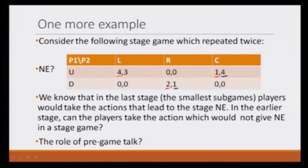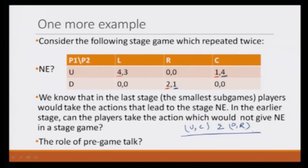L is never the best response for player 2. What we see is that we have two Nash equilibria in pure strategies: U comma C and D comma R. Now let us say this game gets repeated twice — player 1 and player 2 play this game once, they observe the payoff, and then they play again. What would happen?